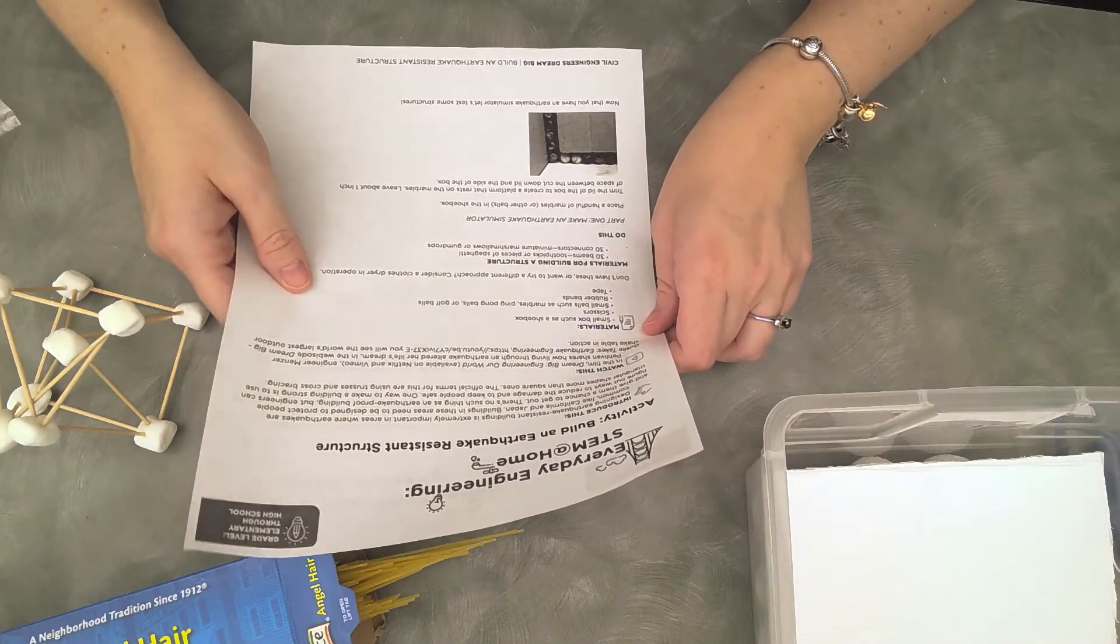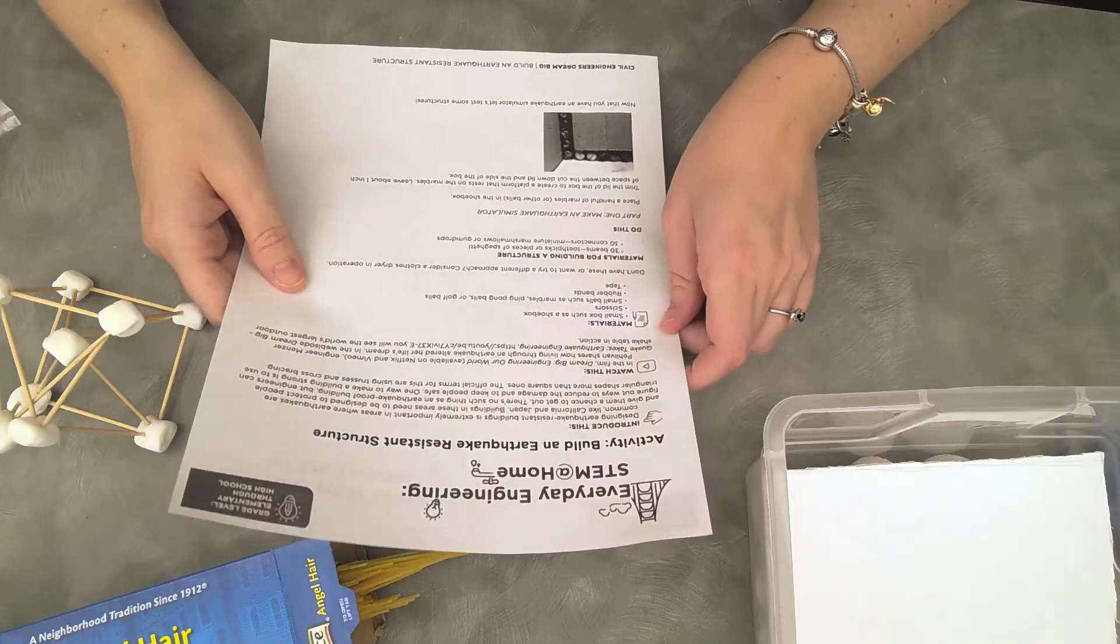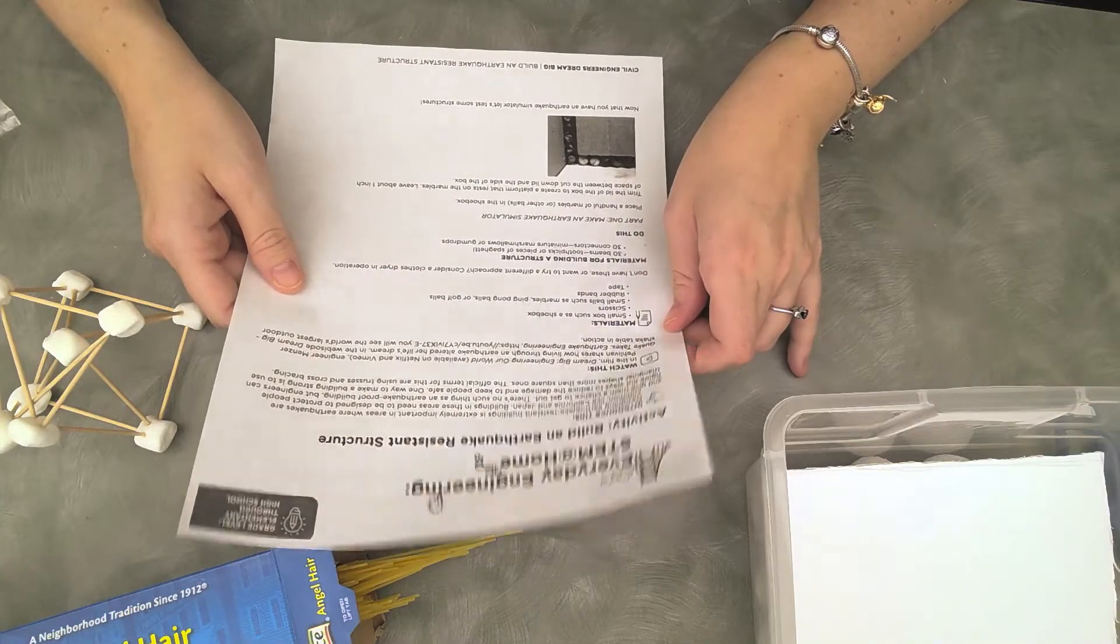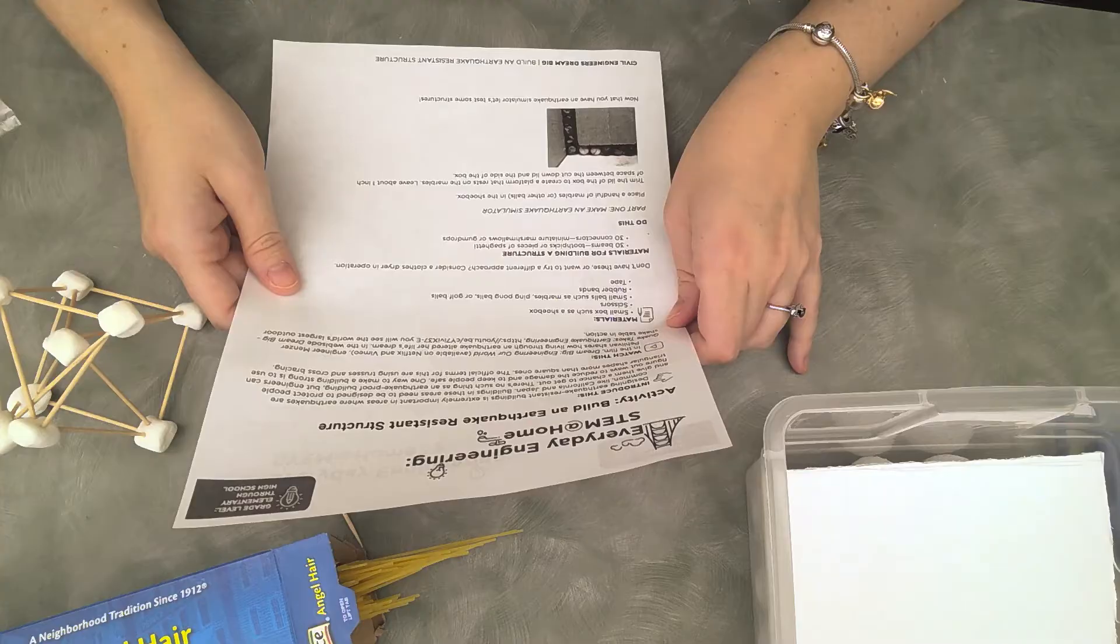Engineers make buildings stronger using triangular shapes. So if you guessed triangular shapes, you were correct. And the official terms again are trusses and cross bracing.